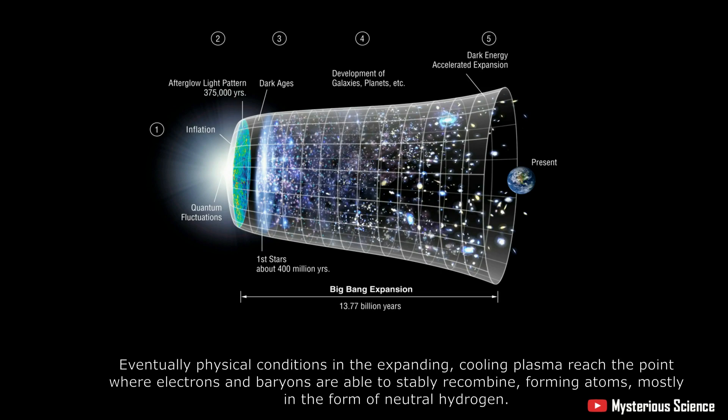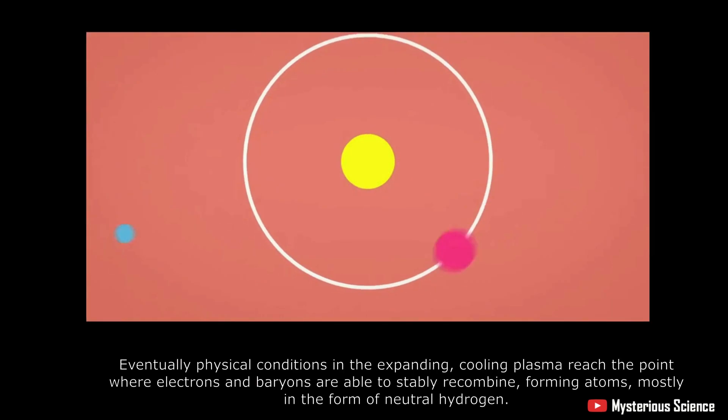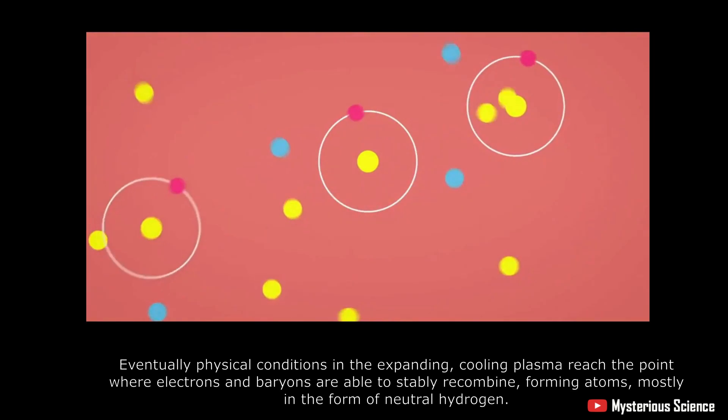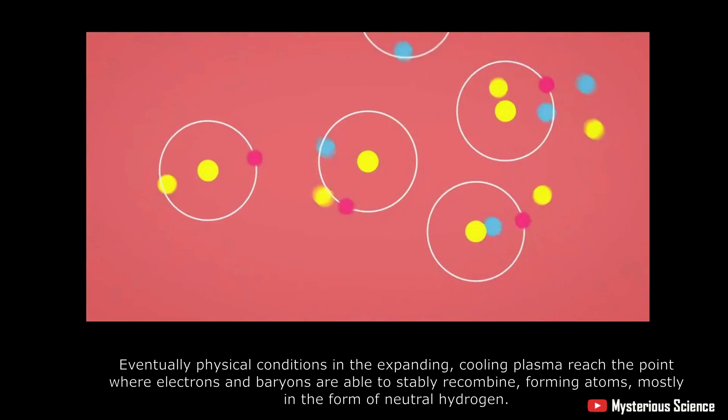2. Eventually physical conditions in the expanding, cooling plasma reach the point where electrons and baryons are able to stably recombine, forming atoms, mostly in the form of neutral hydrogen.